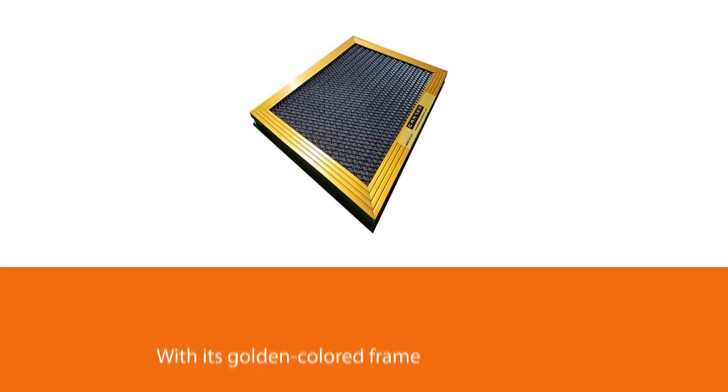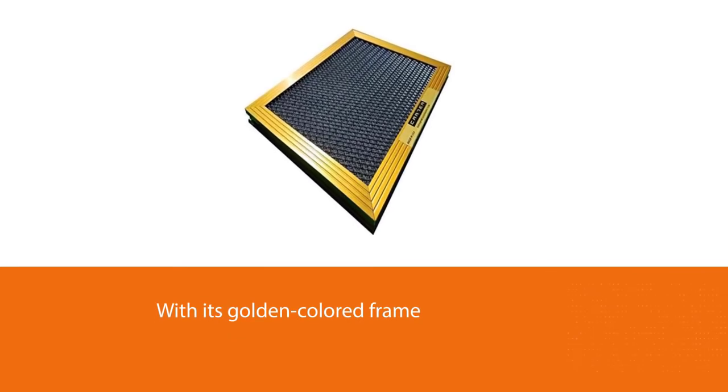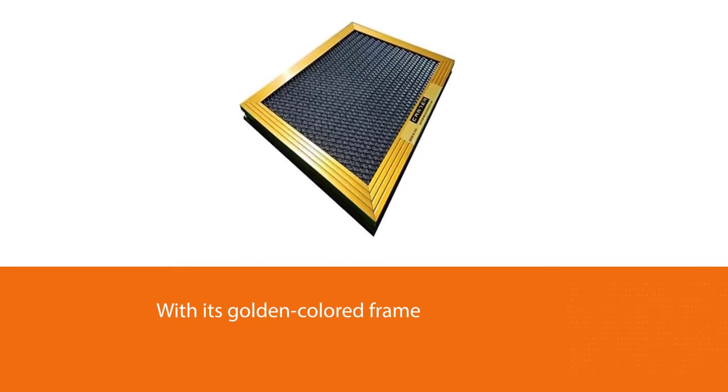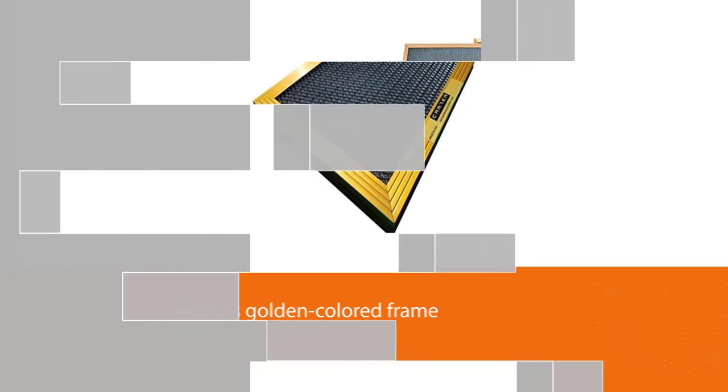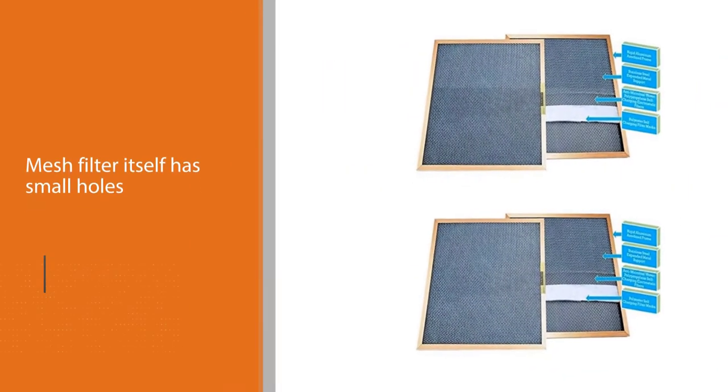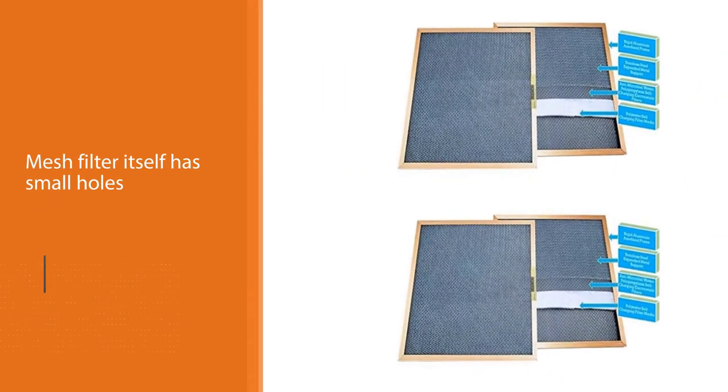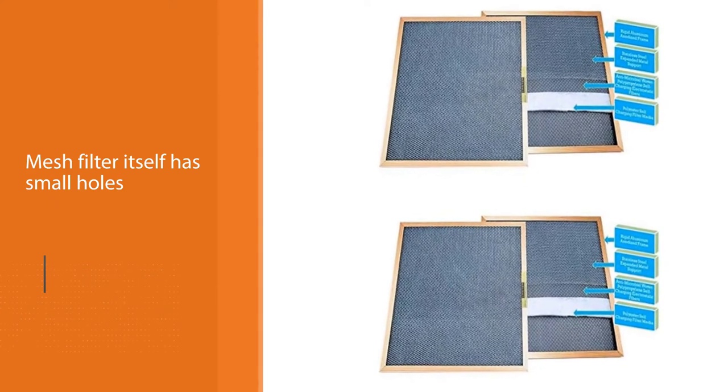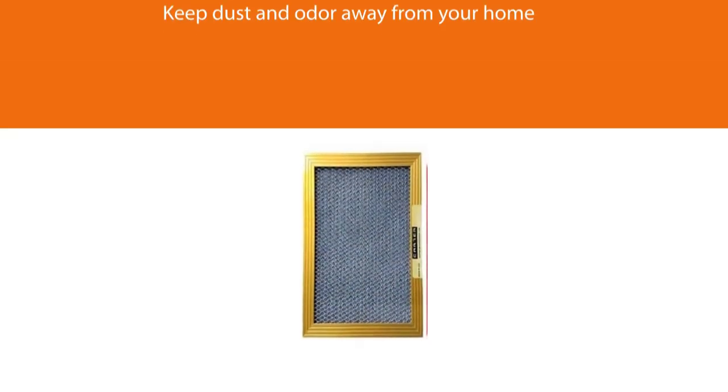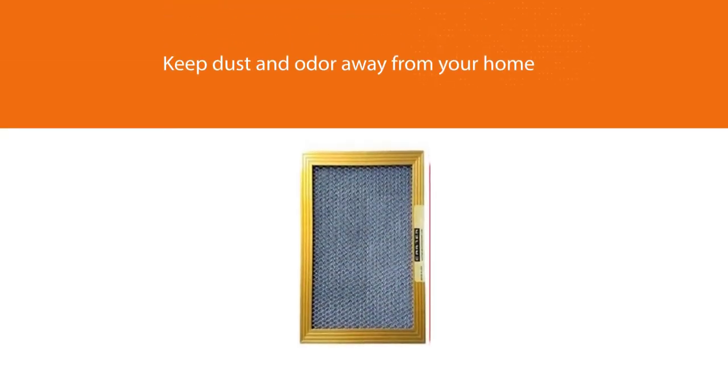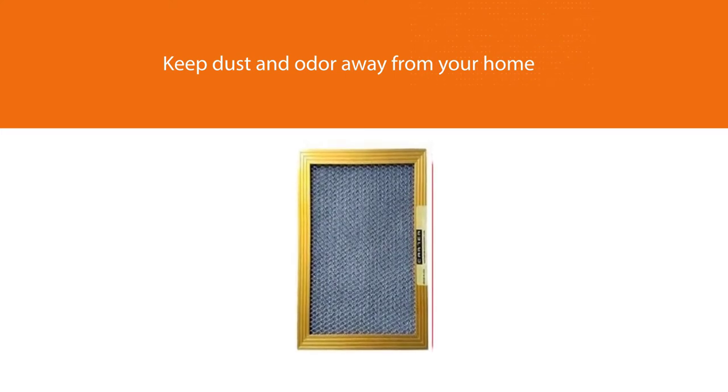The mesh filter itself has small holes that'll keep dust and odor away from your home. Because of such small openings, it might come as a surprise to some that this has no burden on a furnace's flow rate. It'll remain the same as it did with your previous filter. Fully washable, electrostatic, and dust-holding capacity 165 grams.